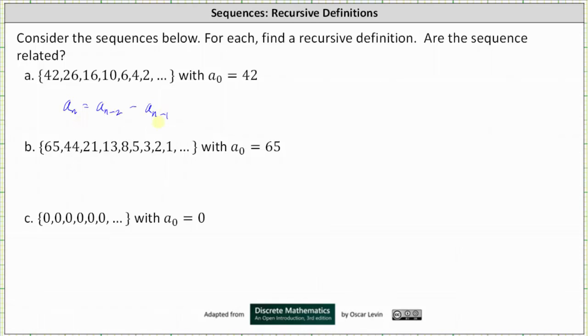So this is the recurrence relation, but we also need to give the initial conditions in order to have a recursive definition. So with this recurrence relation, the initial condition must state that a sub 0 is equal to 42, and that a sub 1 is equal to 26.